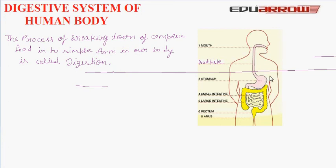There are many digestive juices which help to break down protein of the food into simpler form. From the stomach, food is pushed into the small intestine, where more digestive juices are added to the food. Here, food changes into simple liquid form. The walls of the intestine absorb this food, which then passes into the blood.